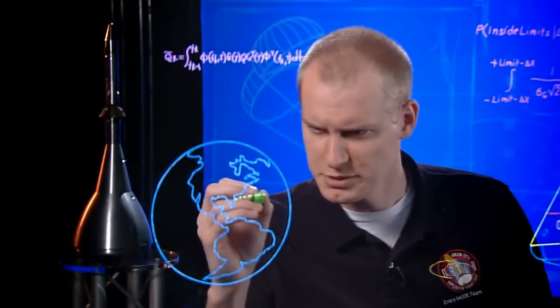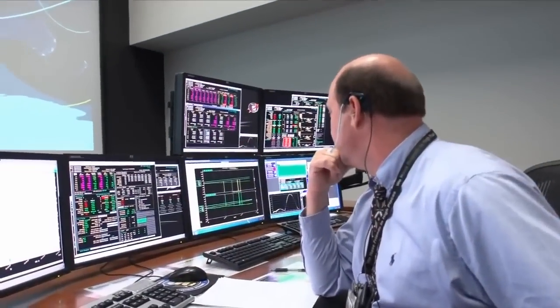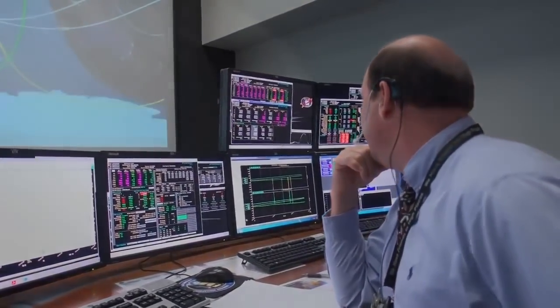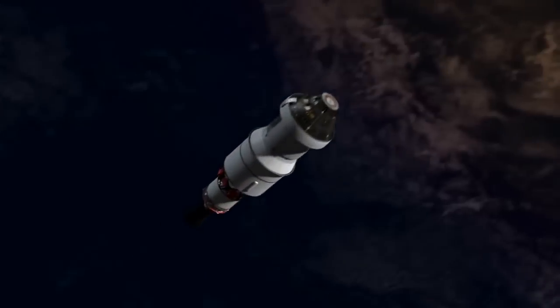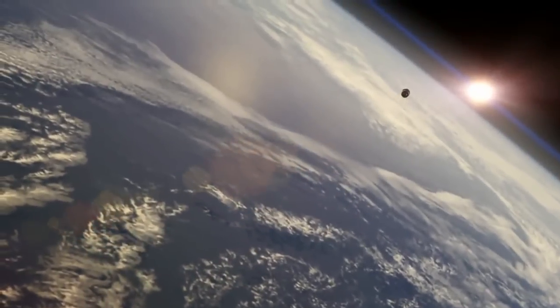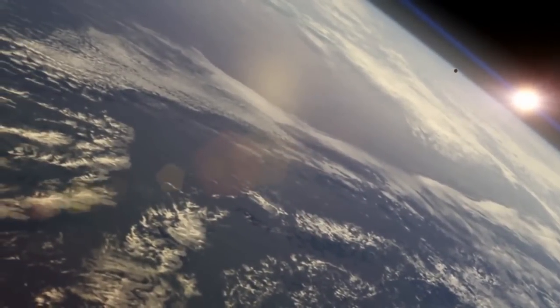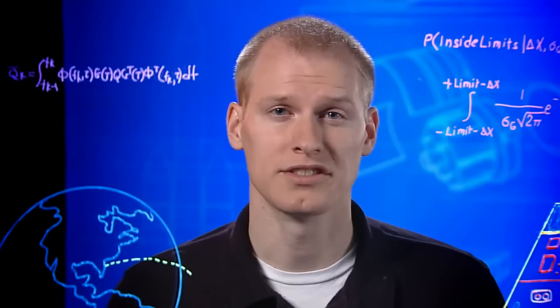As the spacecraft and the upper stage begin their first lap around Earth, mission control in Houston is monitoring the progress of the flight. Orion's over 100 miles up and going about 17,000 miles per hour. Just as it passes over the Indian Ocean, we lose communication.